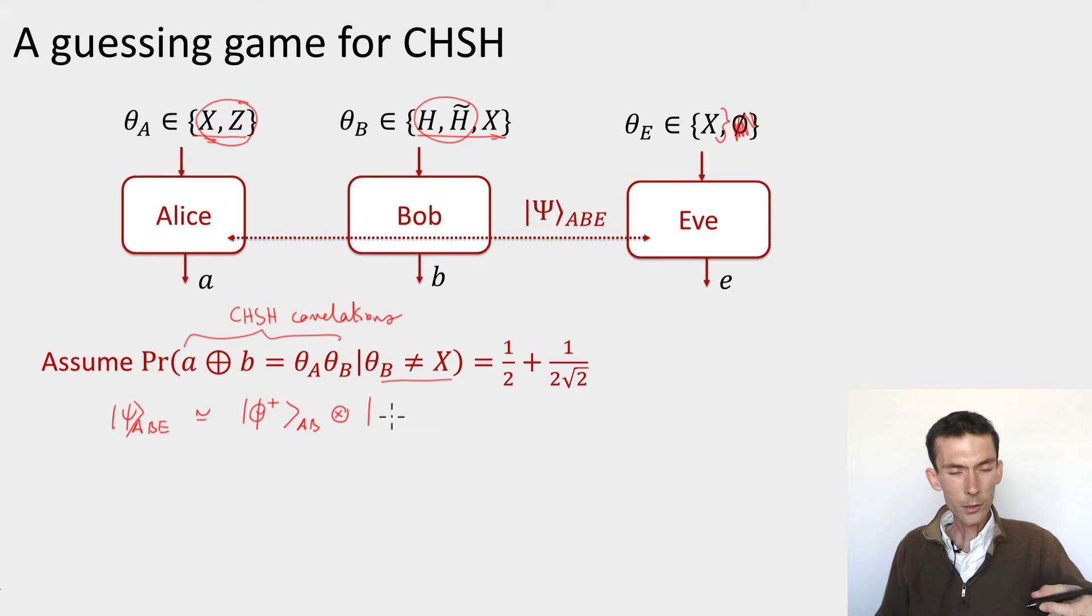Let me include her in this, let me not call it junk out of respect for Eve, let's call it auxiliary state. And this can involve some part on A, some part on B, and some part on E. So,